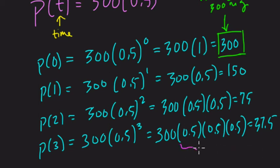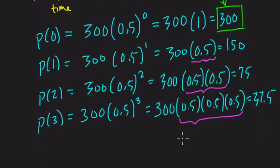Well, 0.5, right, in each case, is representing the number of times that the substance is being halved. In other words, it represents the rate of decay, we call it.